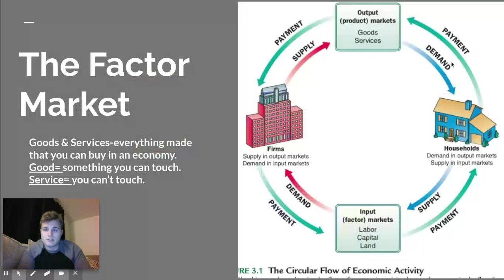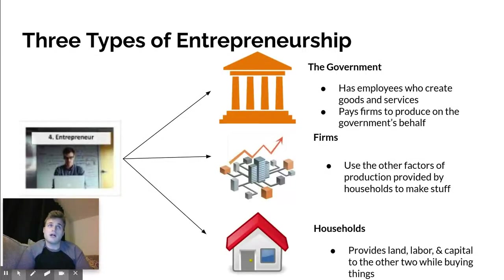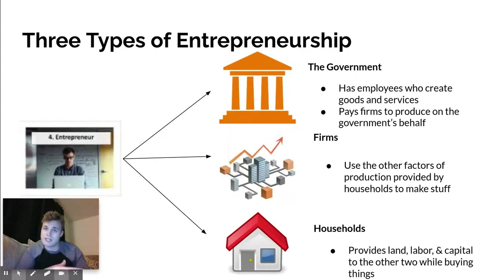There are three main parties within the factor market. This picture is not holistic — it's missing the third party that I like to include when I think of the economy. When it comes to entrepreneurs, you can either have the government. The government has employees who create goods and services, and the government also pays businesses to produce things for the country as a whole. For example, the local government wants to build a school, so they're going to pay private contractors to build the school building, and then provide public goods in the form of education to students in that community.